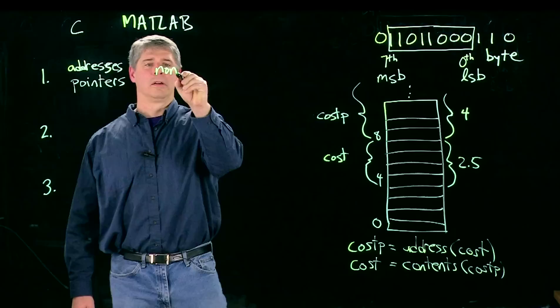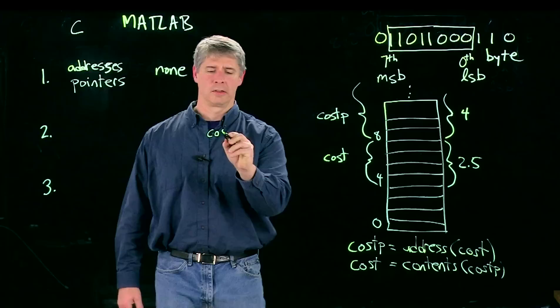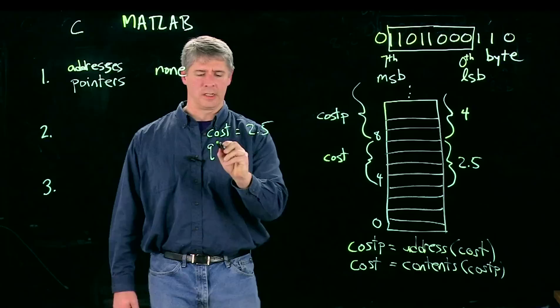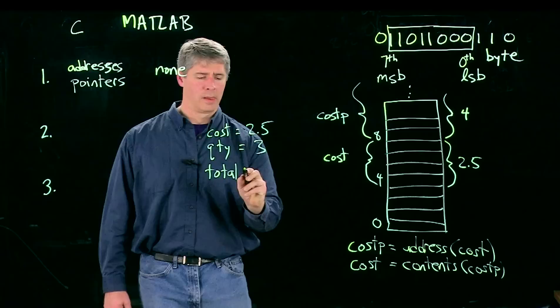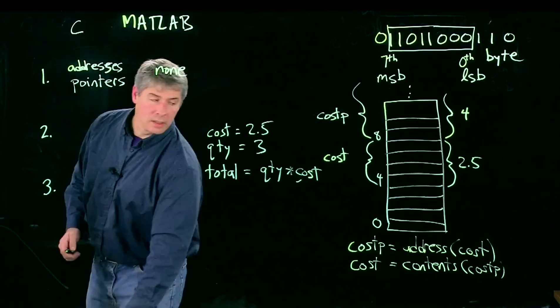Second difference between C and MATLAB. If I was going to write some code, use some variables in MATLAB, I could just start using them. I could write cost is equal to 2.5, the quantity of hot dogs is equal to 3, and I can say the total cost is equal to the quantity times the cost. And now at this point, total is going to have the value 7.5, 3 times 2.5.